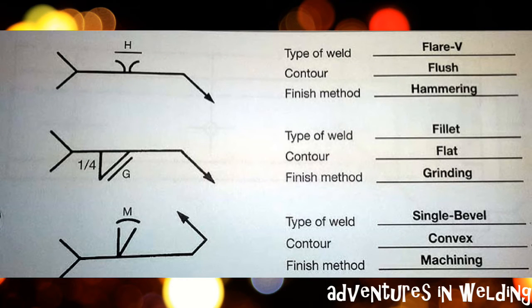Alright, if you look at the top one again, I told you that was a flare-V. The straight line is telling you it is a flush finish and it needs to be hammered. The second one is a fillet weld on the arrow side, it needs to have a flat face, and you are expected to grind it. The bottom one is a single bevel weld with a convex contour—you can tell by the curved line—and the finish is to be machined. How are you guys doing so far? Hope you're doing well.